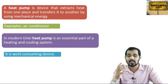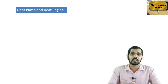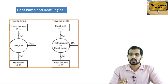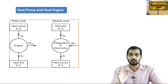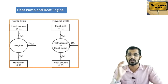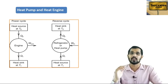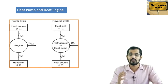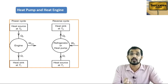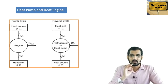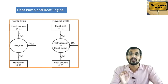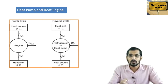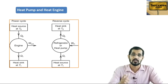I will explain the heat engine in detail in the next slide. We will see the figure for the heat pump and heat engine — a figure you have studied in thermodynamics as well. On the left-hand side is the heat engine and on the right-hand side is the refrigerator or heat pump. In the heat engine, heat flows from higher temperature T2 to lower temperature T1, producing work. The power cycle has heat flowing from higher to lower temperature, while the reverse cycle — the heat pump or refrigerator — consumes work to extract heat from lower temperature and provide it to higher temperature.